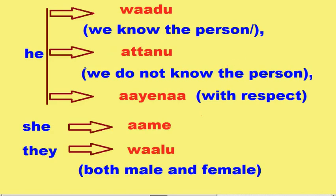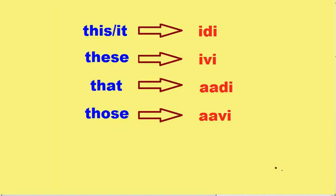Atanu is used when we do not know the person. Ayana is used when we are speaking with respect. 'She' is called Ame. 'They' is called Wallu. Wallu is the same for both male and female.